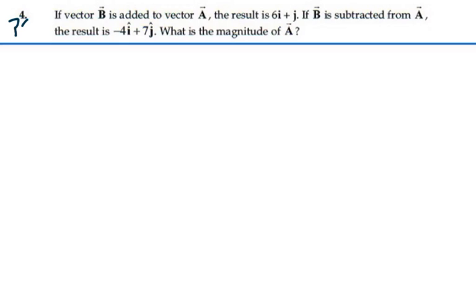Here's problem 3.4. If vector B is added to vector A, the result is 6i minus j. If B is subtracted from A, the result is negative 4i plus 7j. What is the magnitude of A?